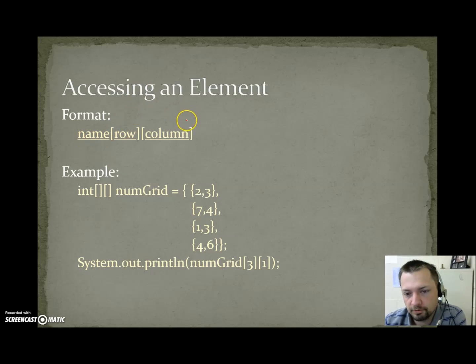Accessing an element. So if you want to find out what a single value in a grid is, it is name bracket whatever row you want bracket bracket column bracket. An example: